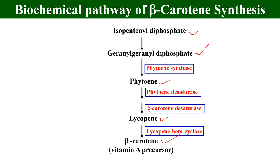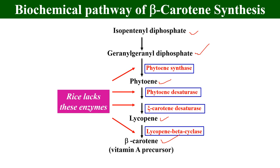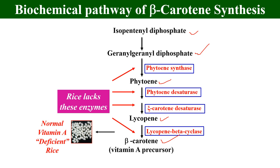This is the biochemical pathway along with the enzymes for the synthesis of beta-carotene. But white rice does not have these enzymes, so ultimately there is no production of vitamin A in normal white rice. That's why normal white rice is deficient in vitamin A. So what did scientists do? They created a new variety of rice known as golden rice, and how they did this will be clear in the next slide.